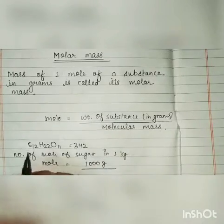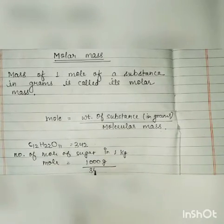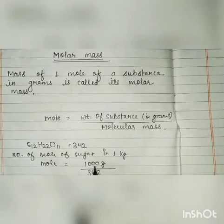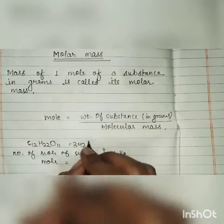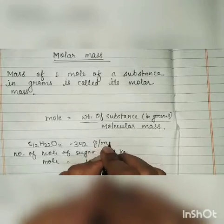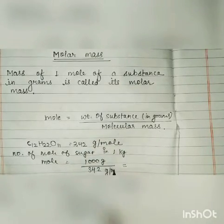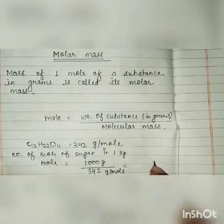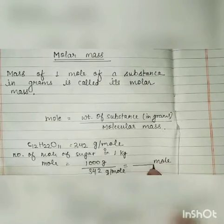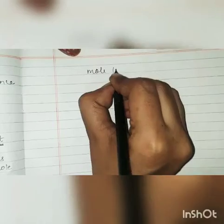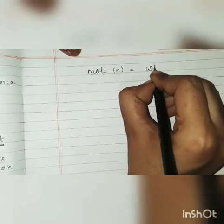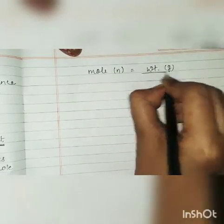Divided by molecular mass, which is equal to 342. Finally you will get the value in moles. Molecular mass is also written in grams per mole — I am explaining why. Mole is represented by n: n equals weight in grams divided by molecular weight.